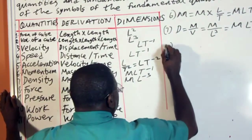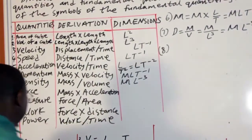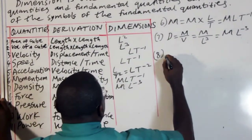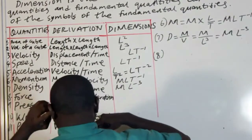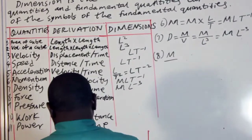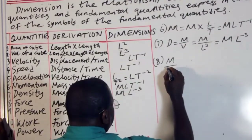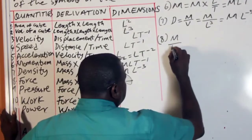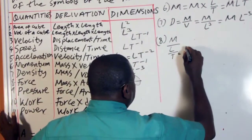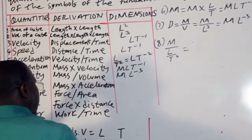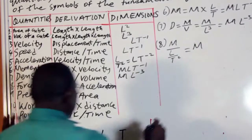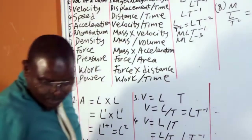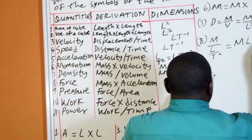Number 8 is force. The derivation of force is mass times acceleration. The fundamental quantity of mass is M, and acceleration is LT raised to power minus 2. So this gives us M times L times T raised to power minus 2, therefore force is MLT raised to power minus 2.